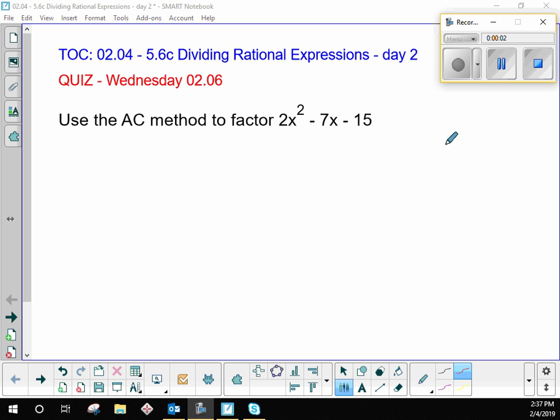Alright, use the AC method to factor this. So we start by doing A times C, right, what multiplies to AC and adds to B. So that's negative 30, negative 7. What two numbers did you use? Negative 10 and 3.